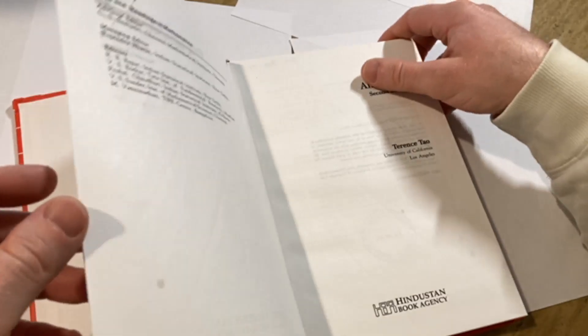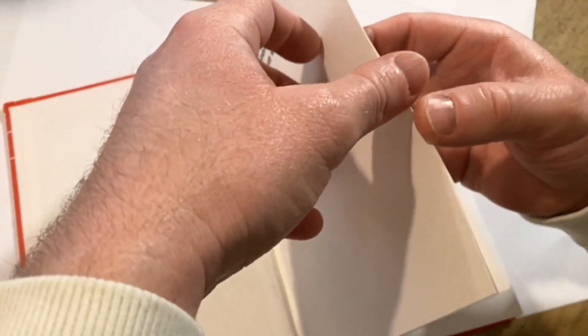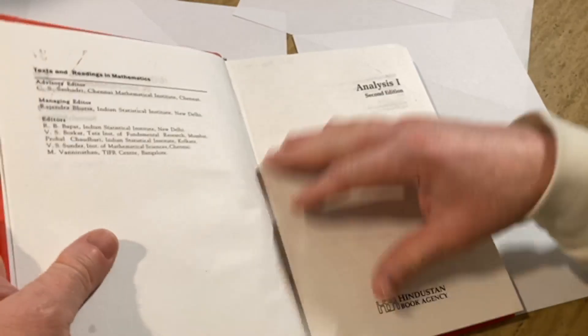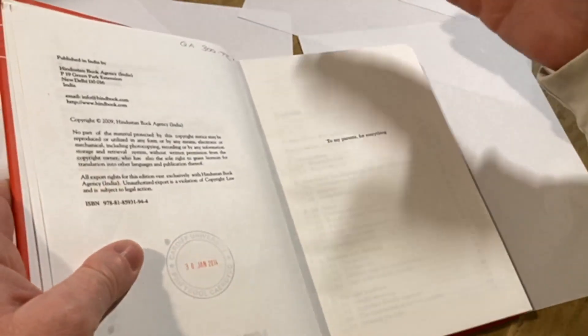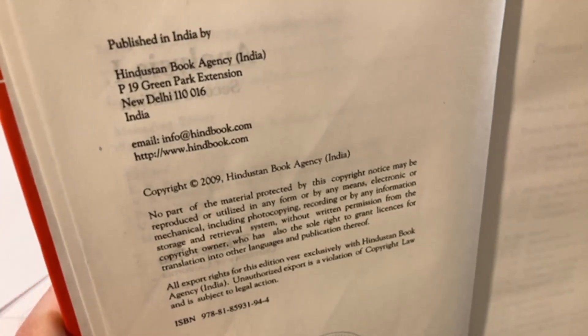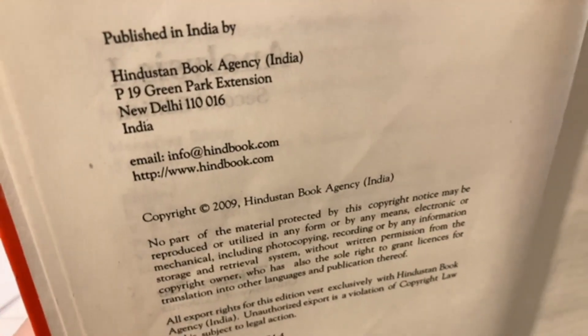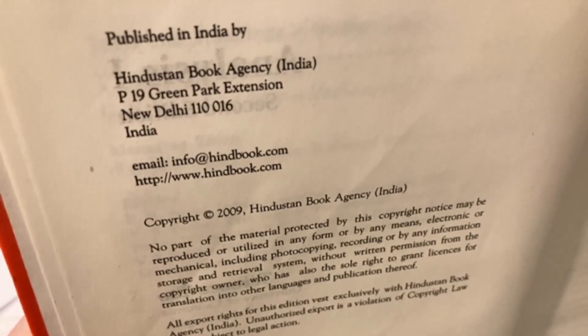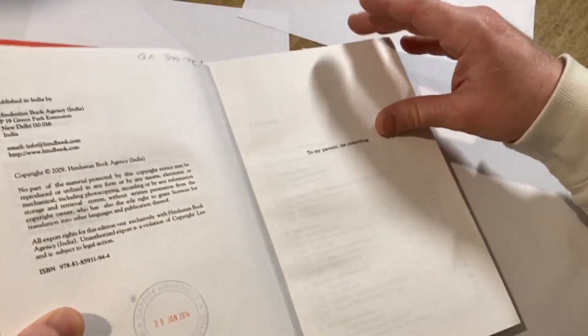So Terrence Tao is an extremely famous mathematician. He is alive and well and he won the Fields Medal. So he's an amazing mathematician. Copyright 2009.